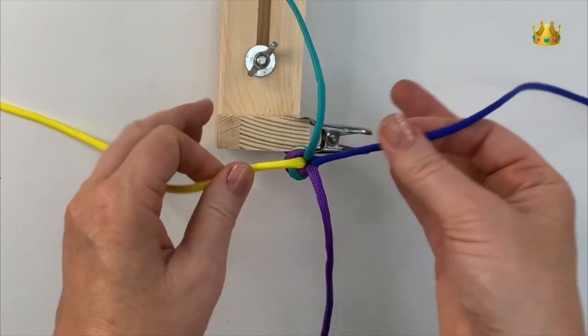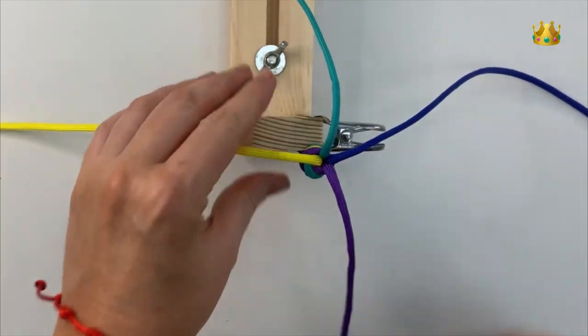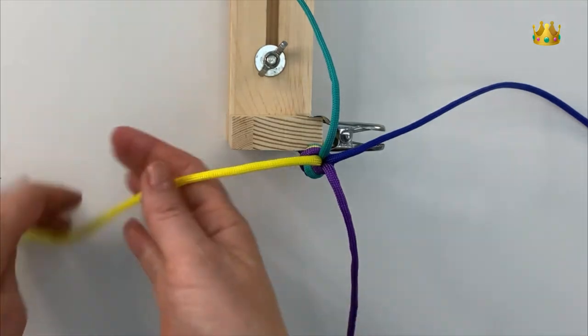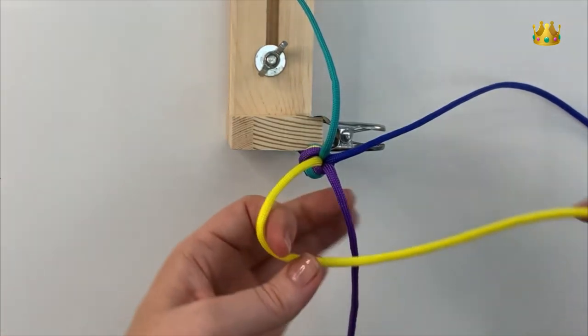So I've just clipped mine onto my jig and now holding those four threads apart we're going to bring each thread around to the right and over the cord next to it.